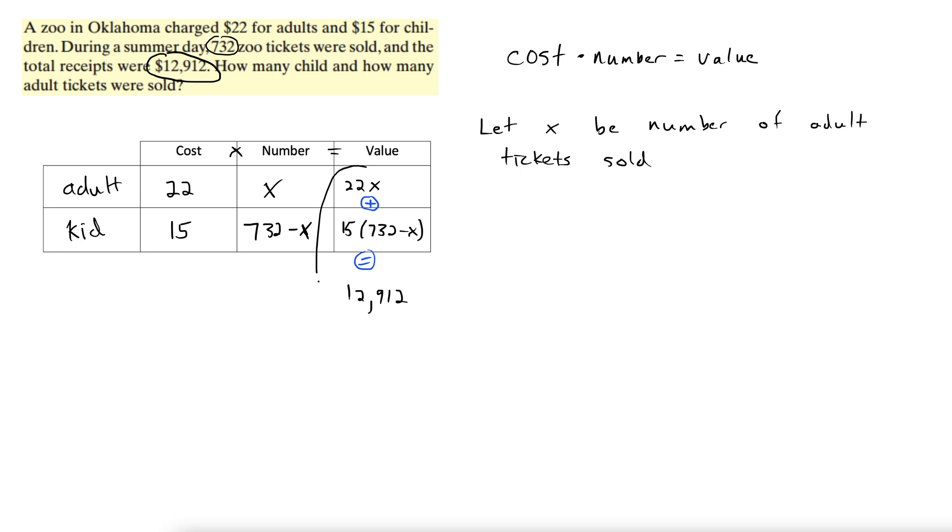And this column right here gives us the equation we need to solve the problem. So let's pull that from the table: 22x plus 15(732 minus x) equals 12,912. Okay, now we just have to solve this equation, not entirely trivial, but the hard part is done.